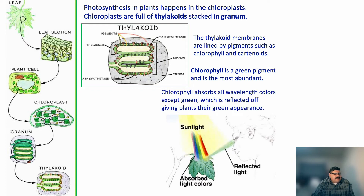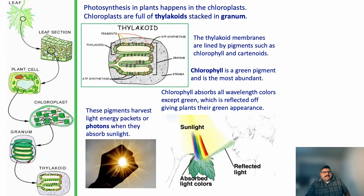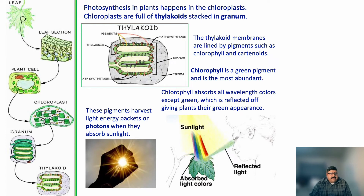Chlorophyll absorbs all wavelength colors except for green, which is reflected off — giving plants their green appearance. The reason we see a plant as green is because that's what's being reflected and what reaches our eyes. The pigments harvest light energy packets called photons when they absorb energy.